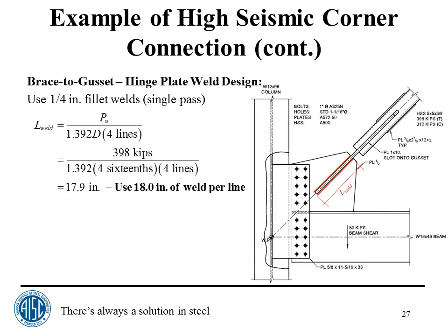For the weld connecting the hinge plate to the gusset and to the HSS, the required weld length is the tensile demand divided by 1.392 times the number of sixteenths, divided by four weld lines (two on the near side, two on the back side of the plate — same configuration at the HSS connection). This gives approximately 18 inches of weld per weld line.